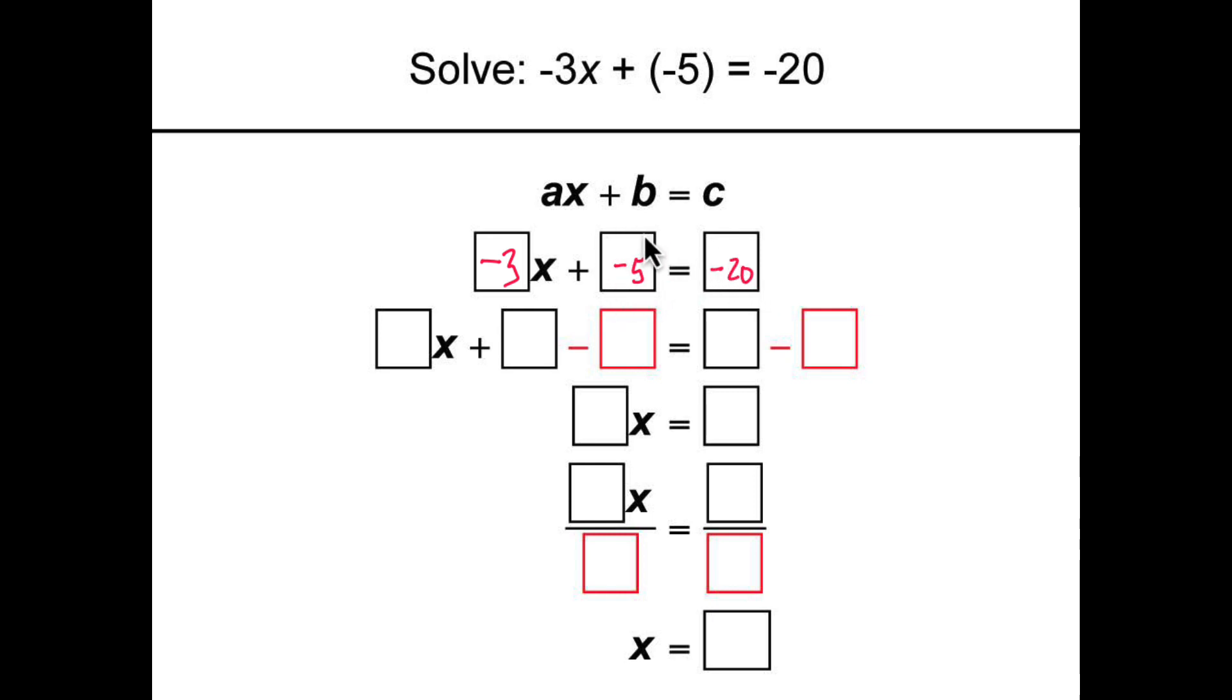We want to get rid of this negative 5, so we need to subtract negative 5 from both sides of the equation. So we get negative 3x plus negative 5 minus negative 5 equals negative 20 minus negative 5.